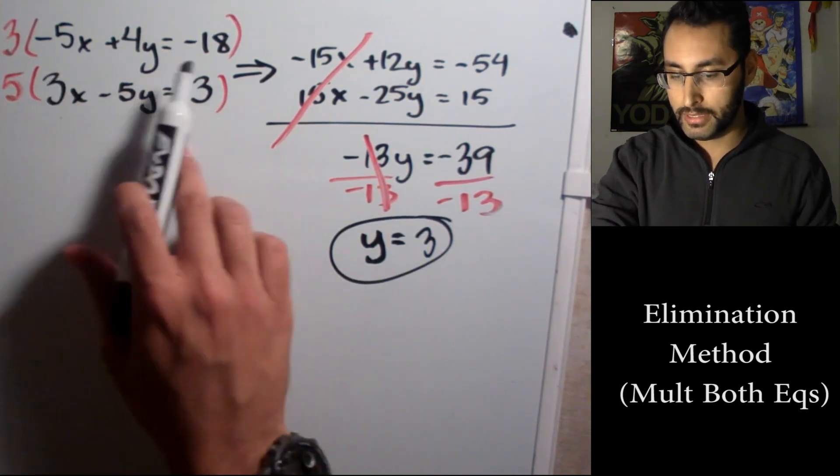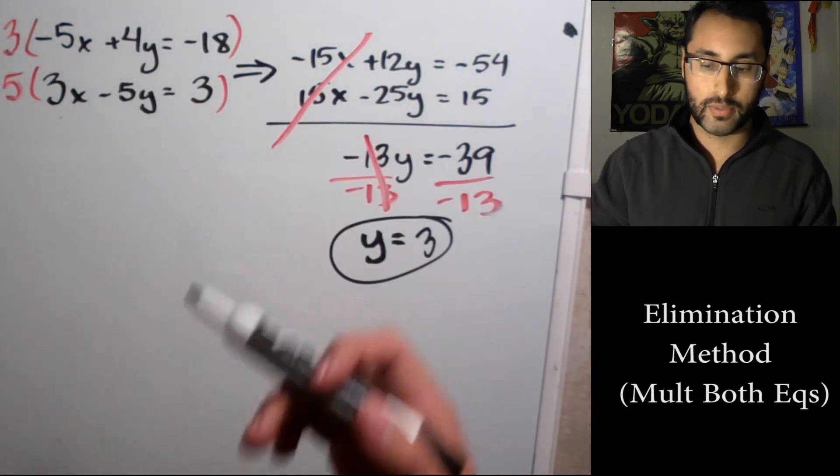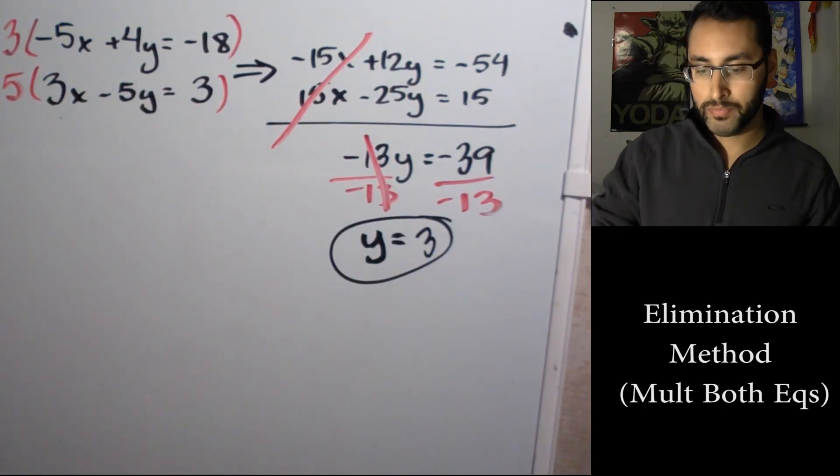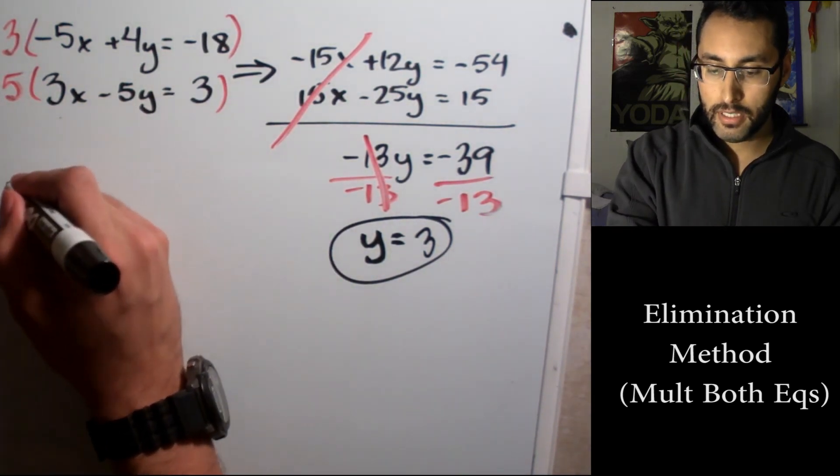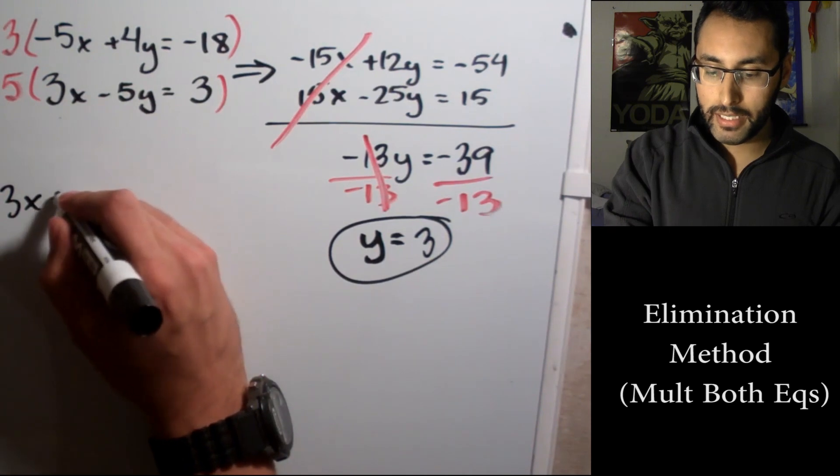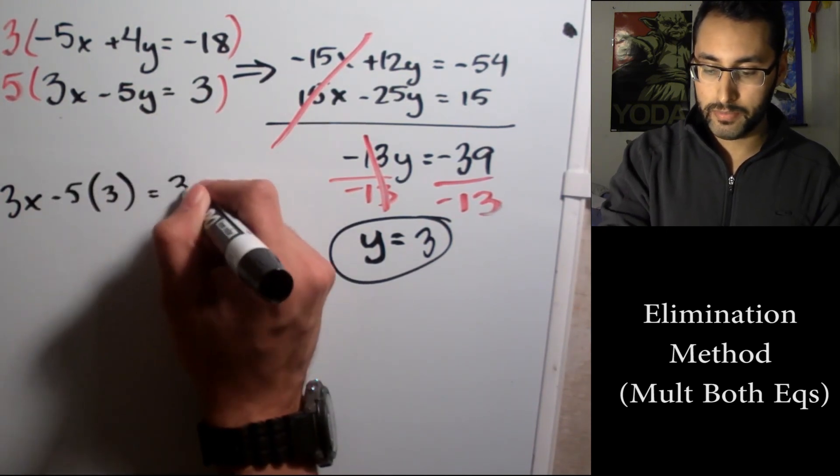So I'm gonna choose one of these original equations. I'm gonna substitute y, which is 3, into one of these equations. Let's choose the second one. So instead of writing y, I'm gonna write 3. So we have 3x - 5(3) = 3.